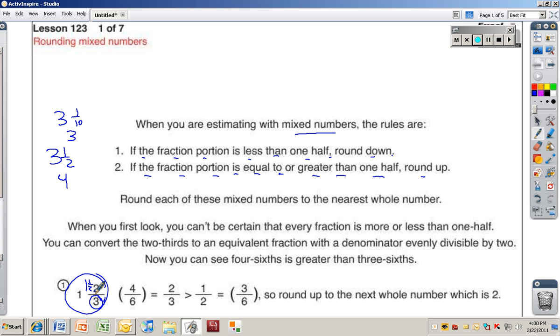Because 1 and a half is half of 3. But this is 2. 2 is bigger than 1 and a half. So this fraction, 2 thirds, is larger than a half. So that means I'm going to round that one up to 2.